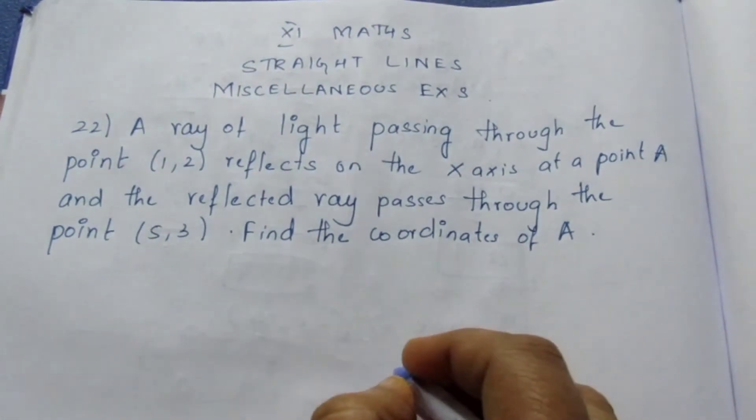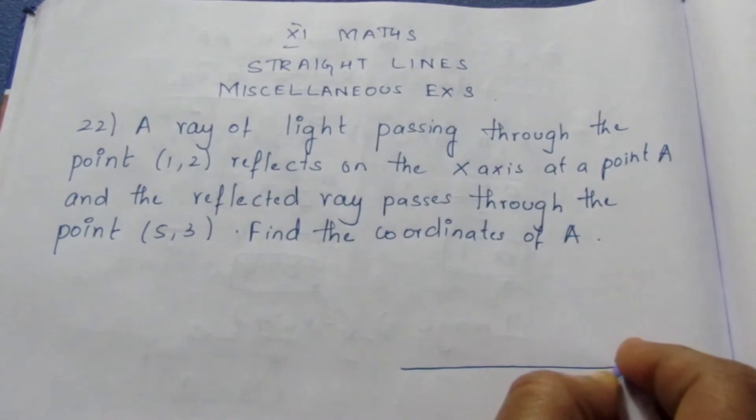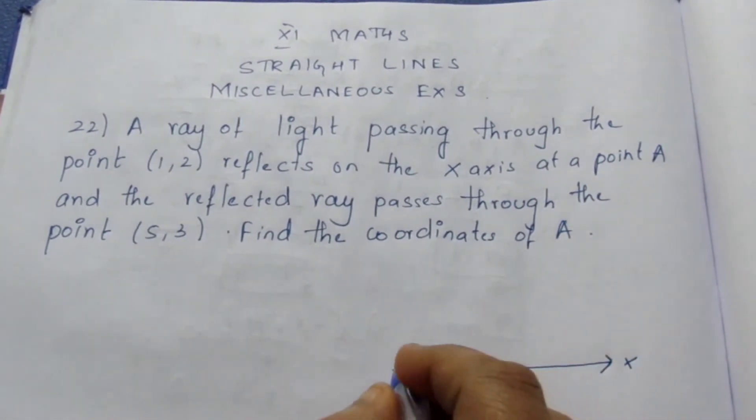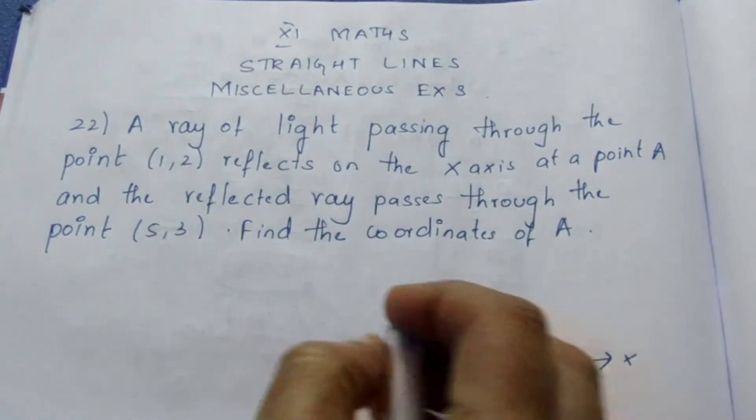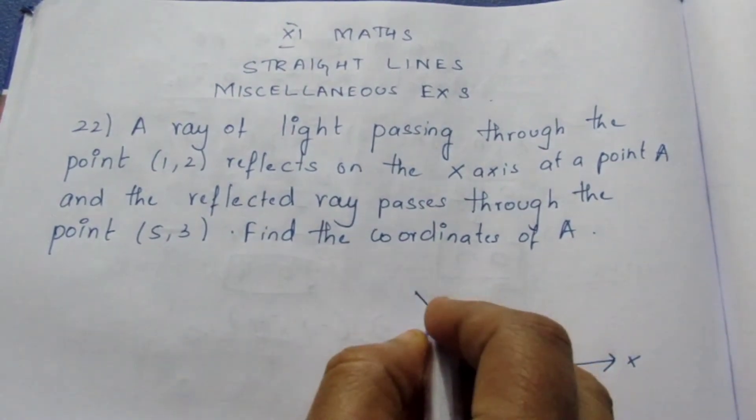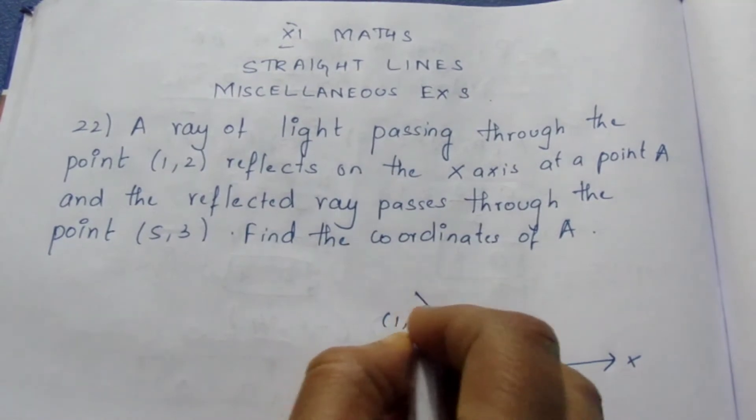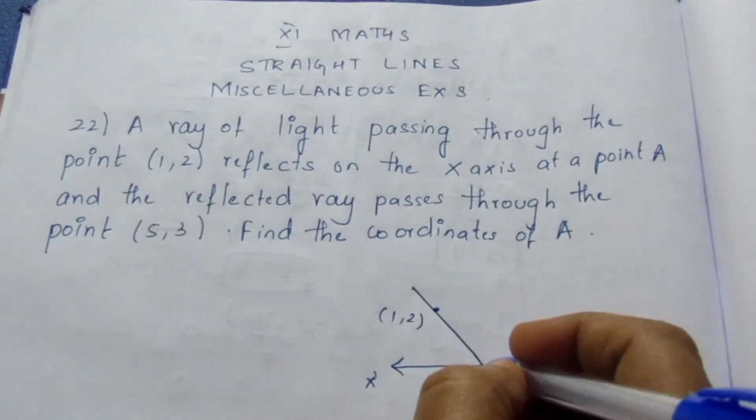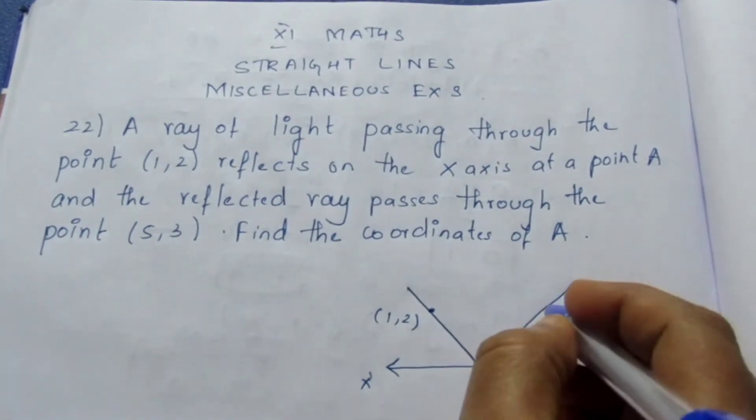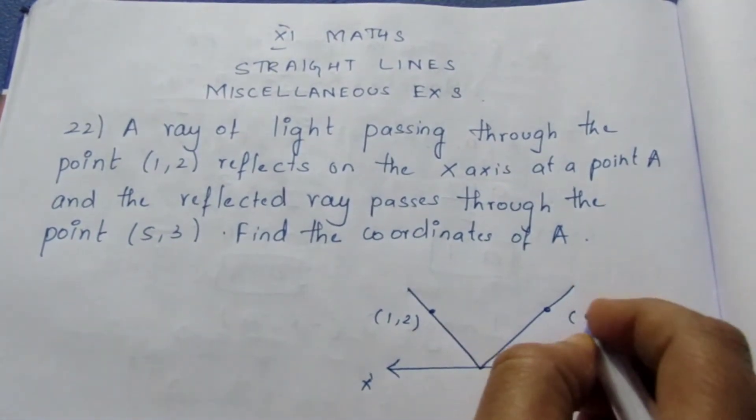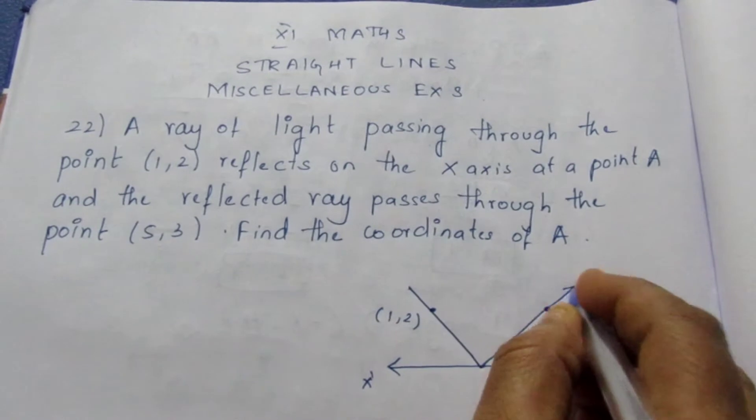Now let me take an x-axis. This is your x-axis. Now there is a light passing through it. It passes through the point (1,2). On the x-axis it reflects, and the reflected ray passes through (5,3). This is the reflected ray. This is the incident ray.